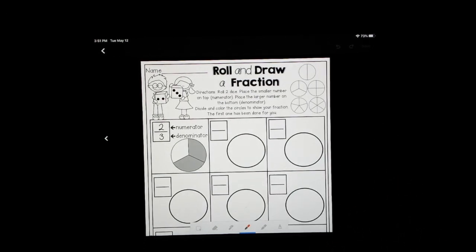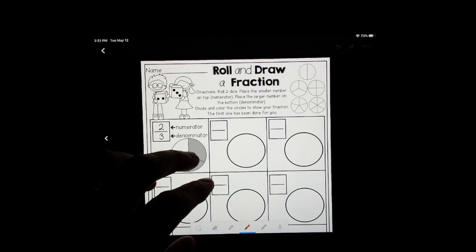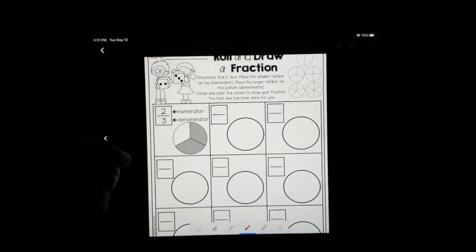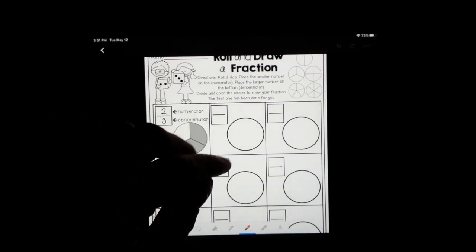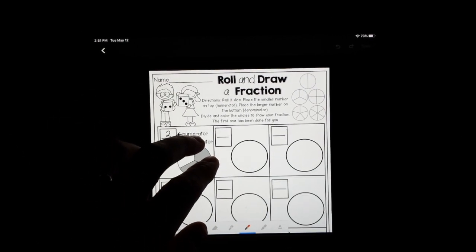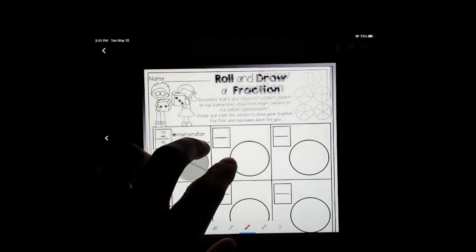All right, here we are going to roll and draw a fraction. If you don't have a die lying around your home, or any dice in any board games, anything like that, you can always use that online one. Just Google virtual dice. So you're going to roll twice, but before you write any numbers down, you need to do both rolls, and here's why.